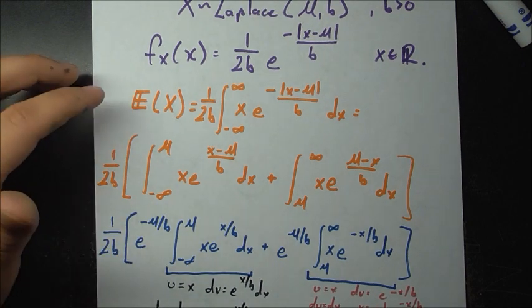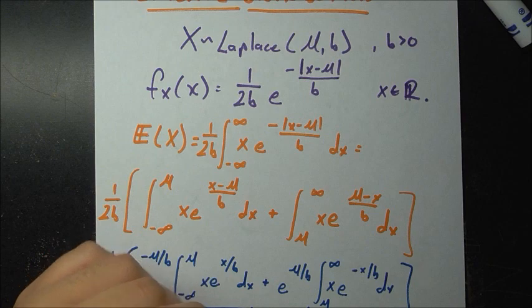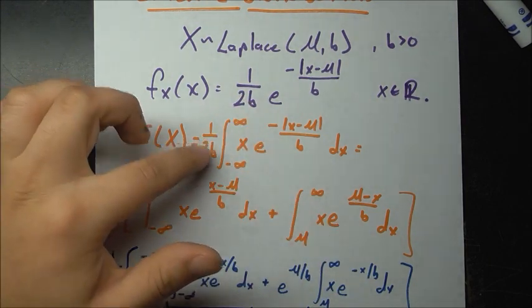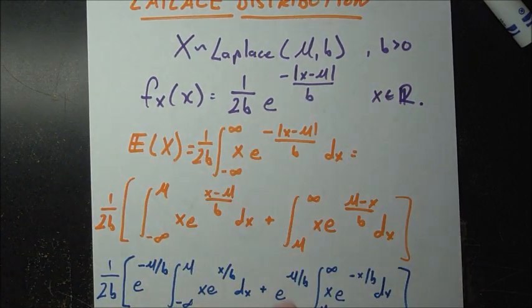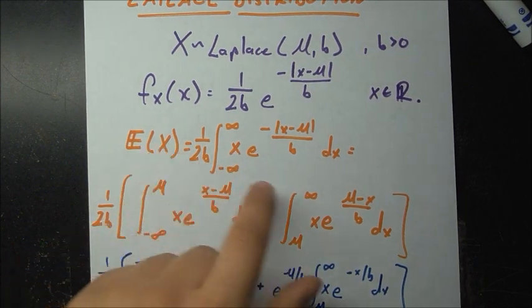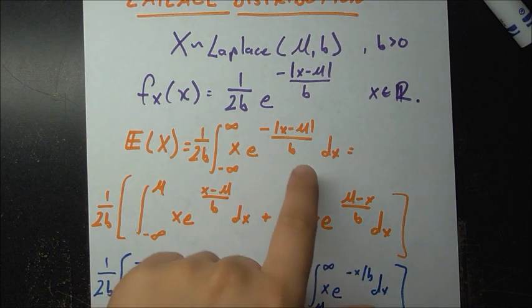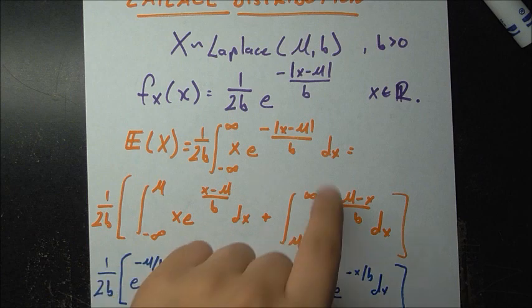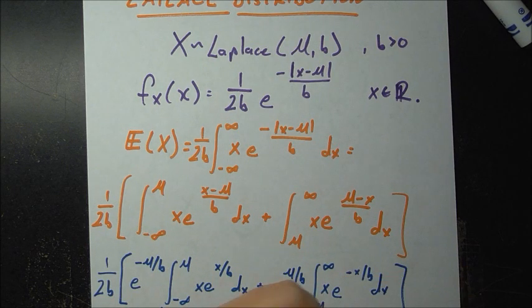Let's find the expected value. We start by writing the routine formula, pulling the constant 1 over 2b out, and writing the integral from minus infinity to infinity. We want the expected value of x, so we have x times e to the power of negative absolute value of x minus mu all over b, dx.